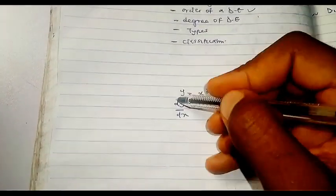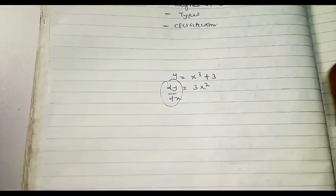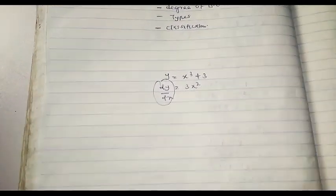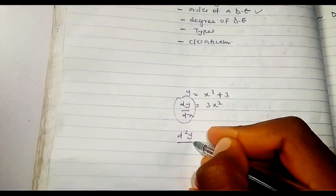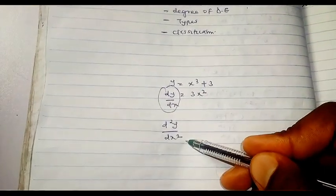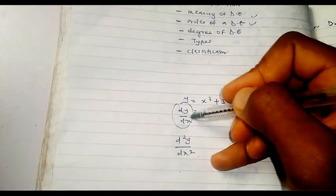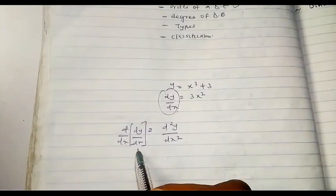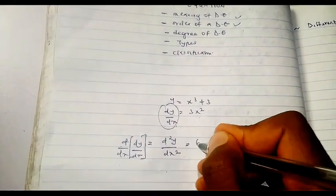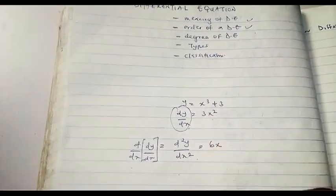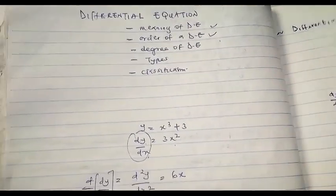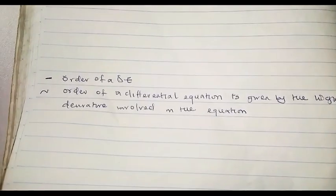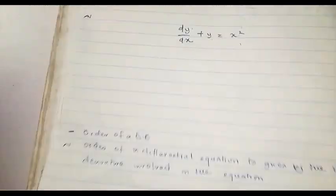This is called a first order derivative because we differentiated only once. We can also differentiate twice or more, giving higher order derivatives. For example, differentiating dy/dx again with respect to x gives d²y/dx² = 6x. As we continue differentiating, we get higher order derivatives. The highest derivative involved in the differential equation is what we term the order of that differential equation.